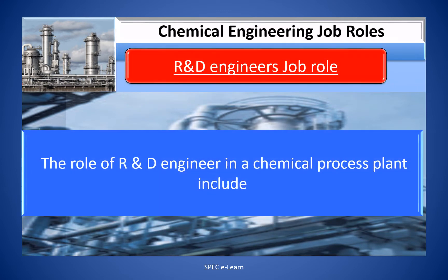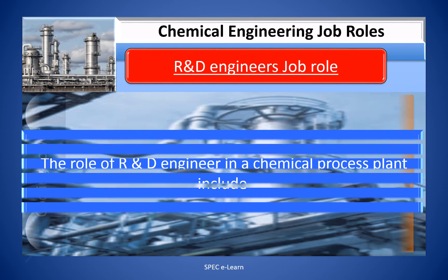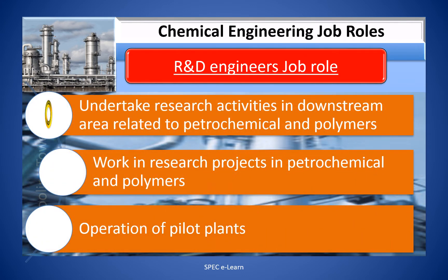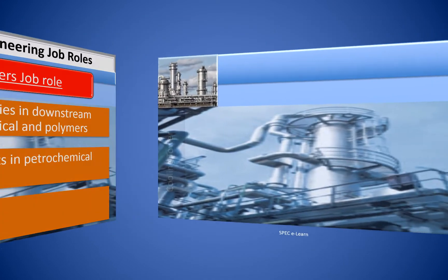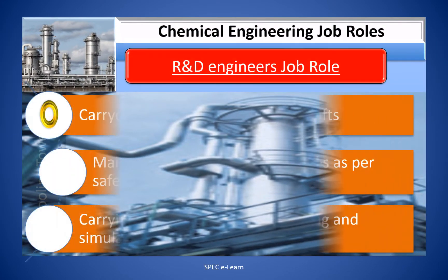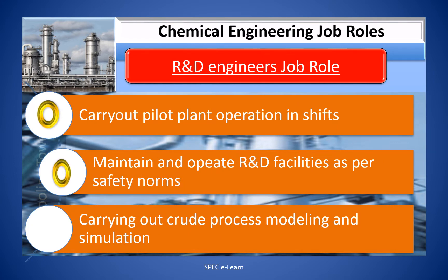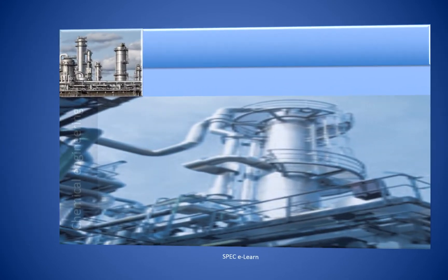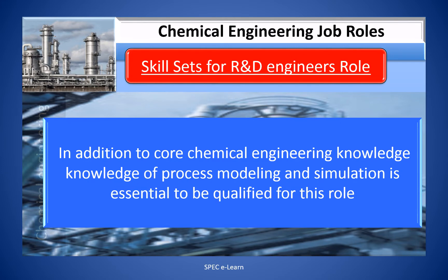R&D engineer job role. The role of R&D engineers in a chemical process plant includes undertaking research activities in downstream areas related to petrochemicals and polymers, working on research projects in petrochemicals and polymers, and operating pilot plants in shifts. Responsibilities also include maintaining and operating R&D facilities as per safety norms, and carrying out process modeling and simulation. In addition to core chemical engineering knowledge, process modeling and simulation skills are essential for this role.